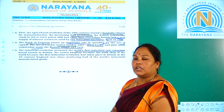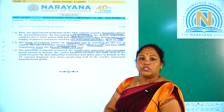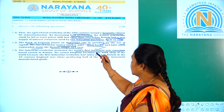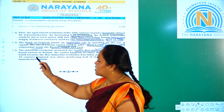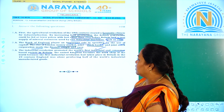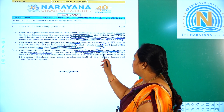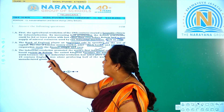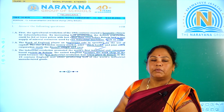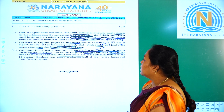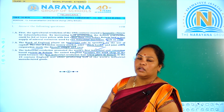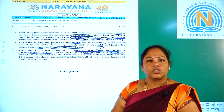Britain was considered the workshop of the world because the first industrial revolution took place in Britain, creating the first industrial and consumer-based society. The United Kingdom — comprising Scotland, Wales, and England — became the workshop of the world as the first industrial revolution had taken place there in the 19th century.